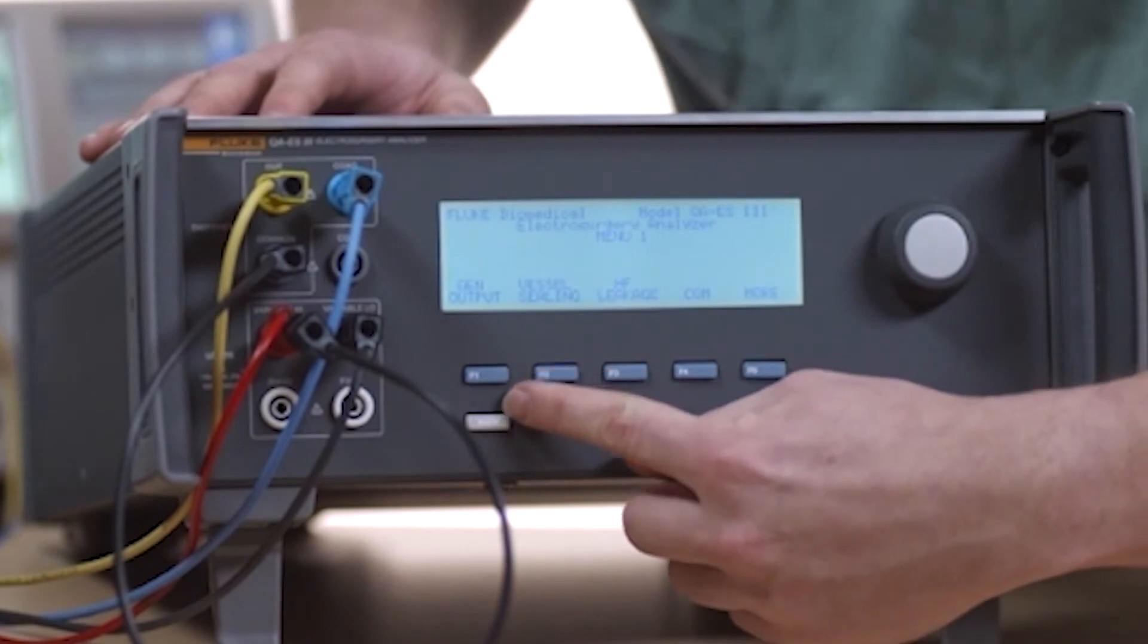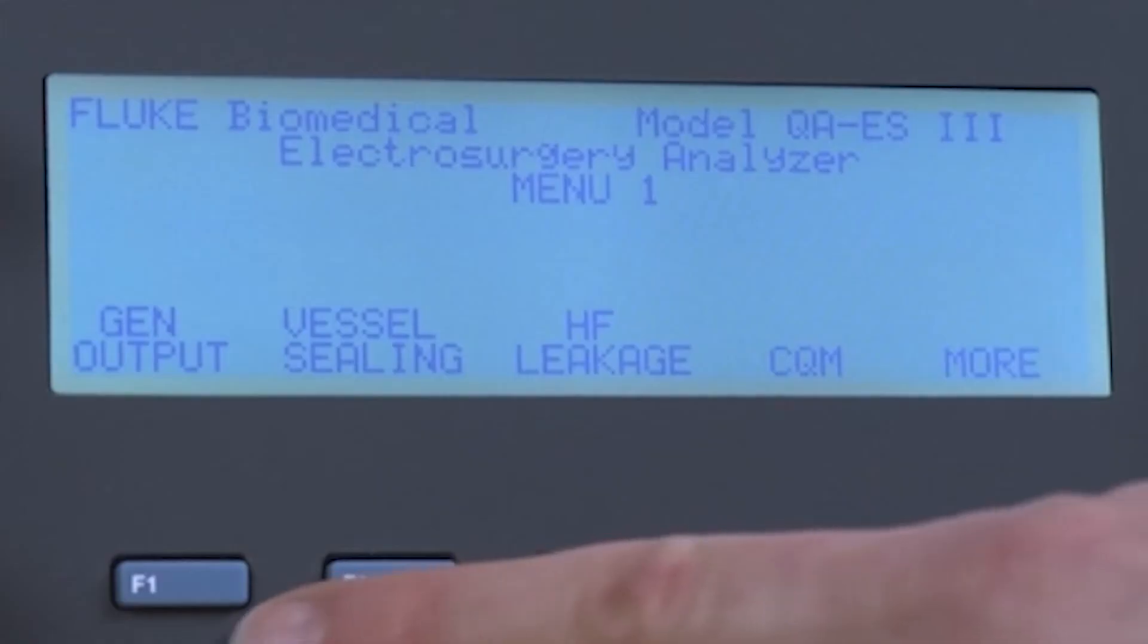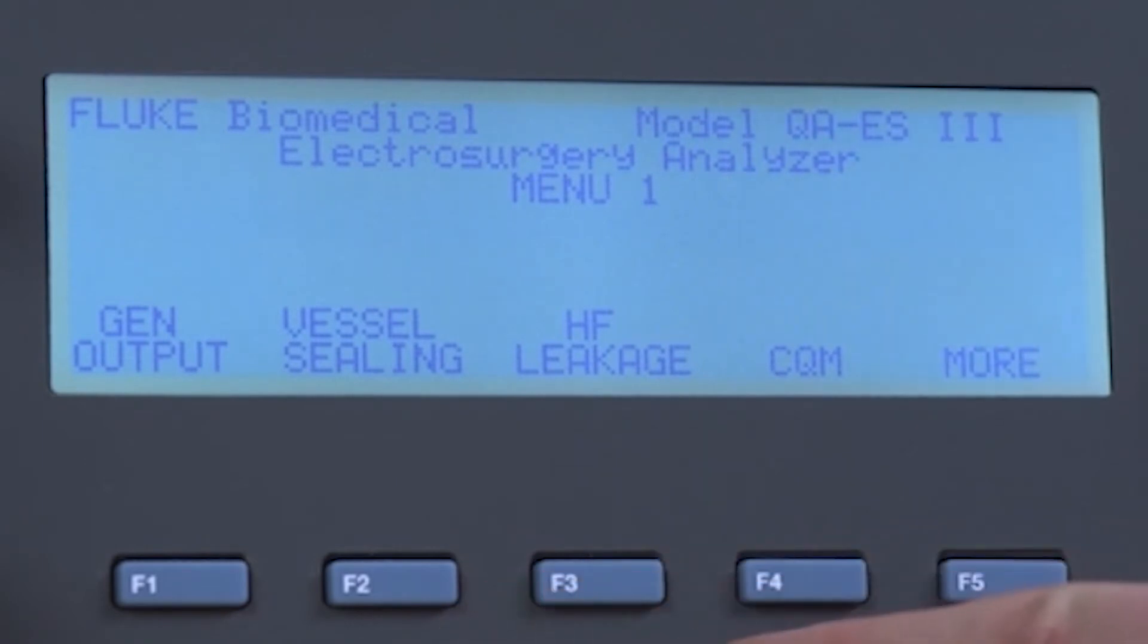Menu 1 allows you to select four different tests: generator output, vessel sealing, HF leakage, and contact quality monitor or CQM. The more button goes to menu 2.